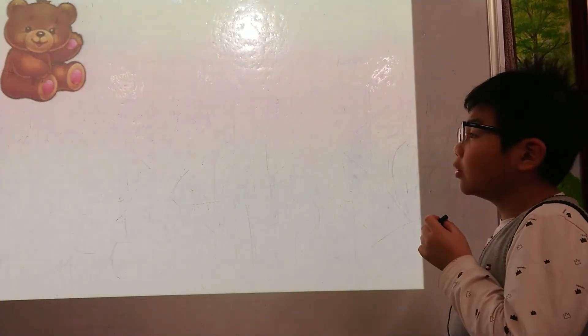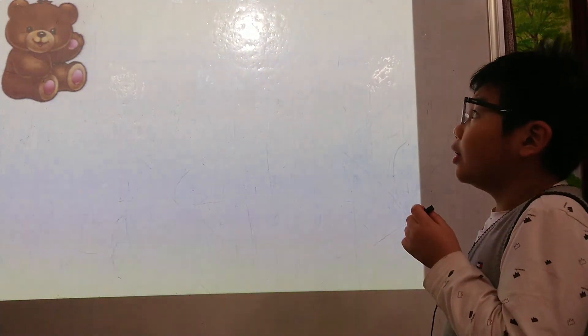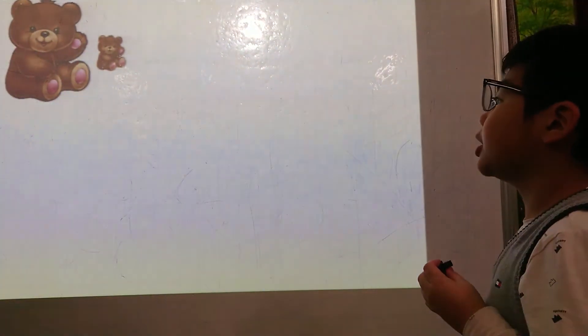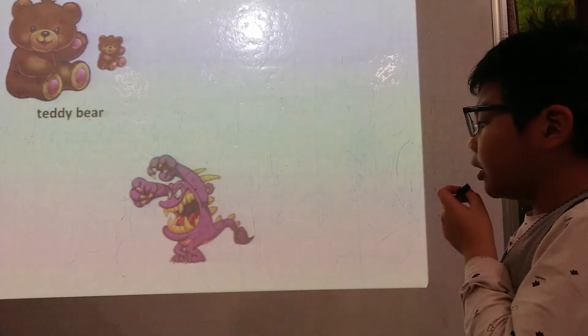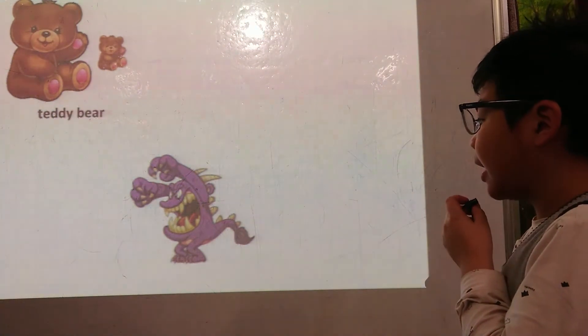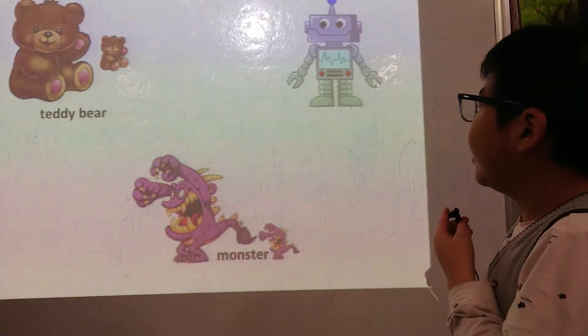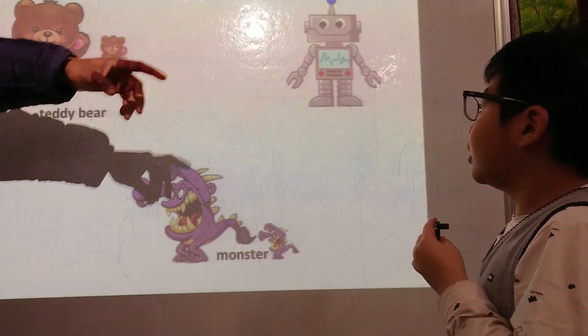Toys. What is it? It's a big teddy bear. What is it? It's a small teddy bear. What is it? It's a big monster. What is it? It's a small monster. What is it? It's a big robot. It's a small robot.